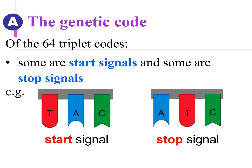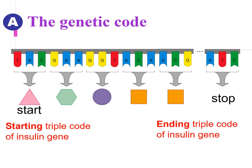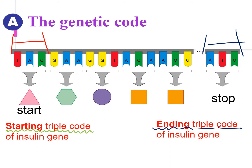Among the 64 triplet codes, some function as a start signal and some act as a stop signal. The triplet code TAC is the starting triplet code, which codes for the very first amino acid in the chain. For the ending point, the code ATC is the ending triplet code, and this ending triplet code does not code for any amino acid. So when there is no amino acid coded for the very last part, this signals the end of the polypeptide chain.